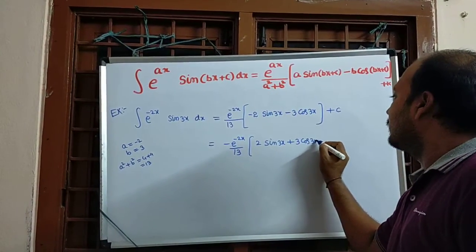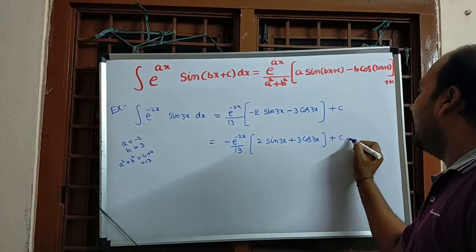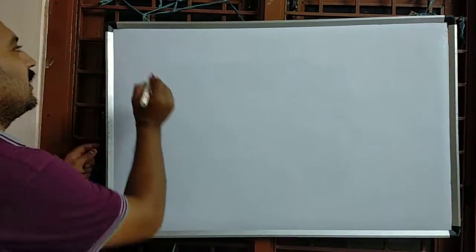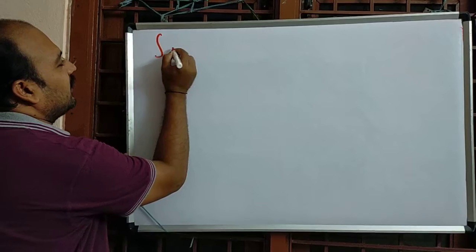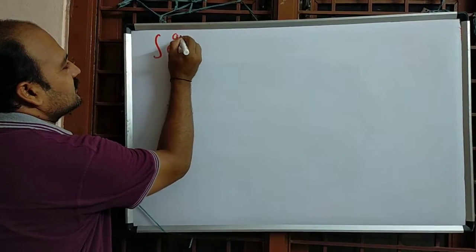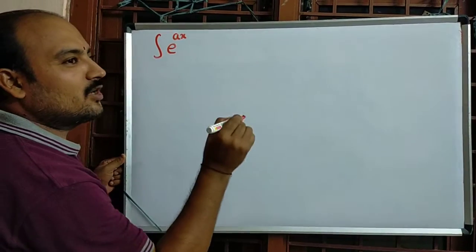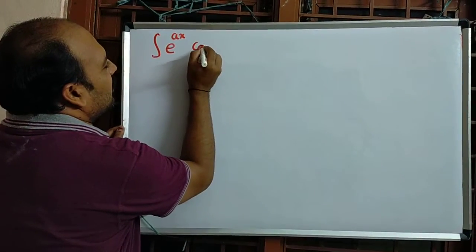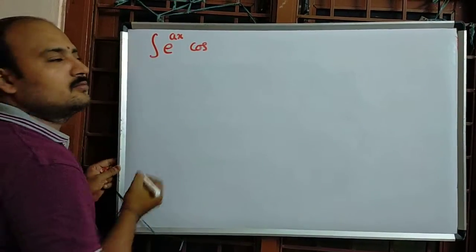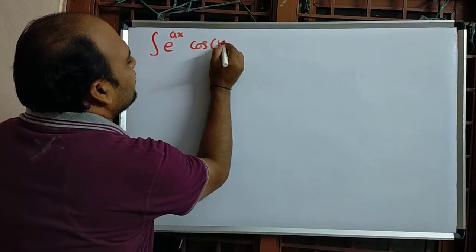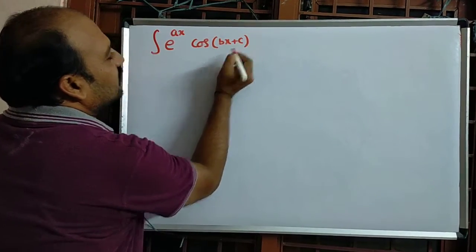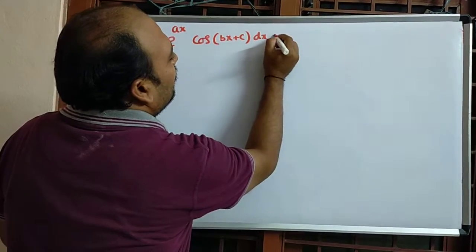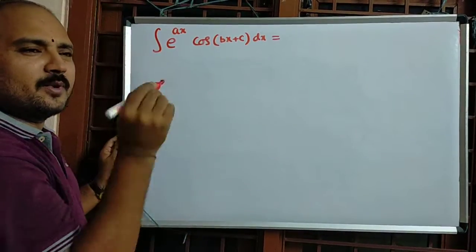Next, the integral of e^(ax) · cos(bx + c) dx. In the previous shortcut formula we used sin; now I am taking cos. The approach is the same as the previous formula.